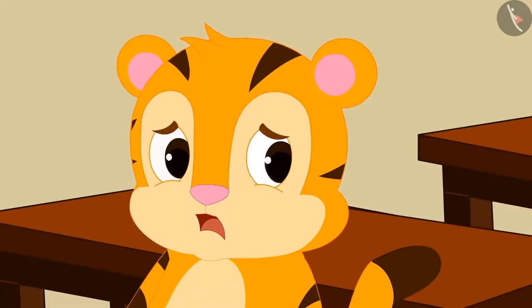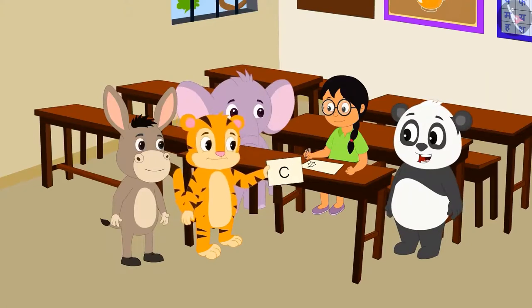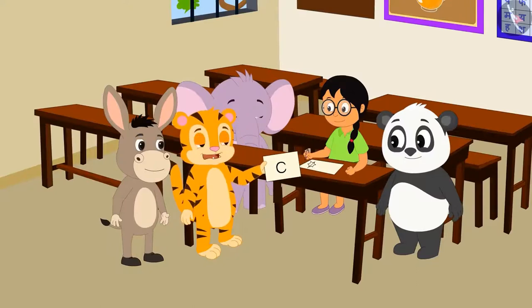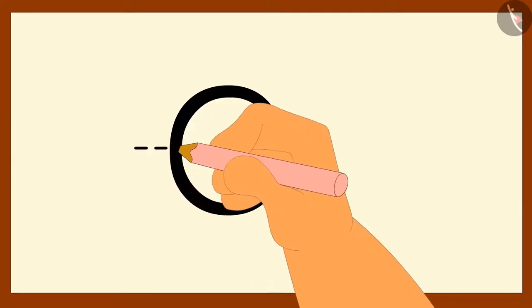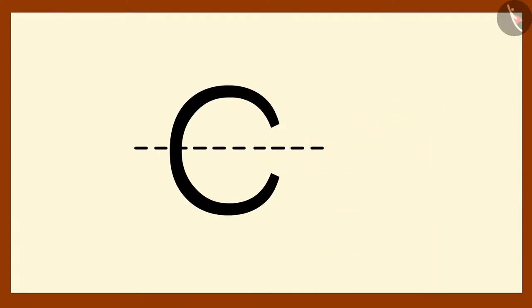Shere Khan draws a C on a paper and shouts, if your magic is better than my magic, then can you divide the C in two similar parts with the help of a dotted line? Minu smiled and drew a dotted line like this on Shere Khan's C.